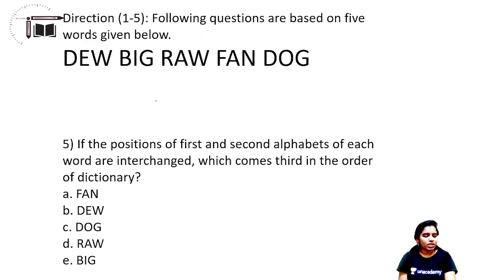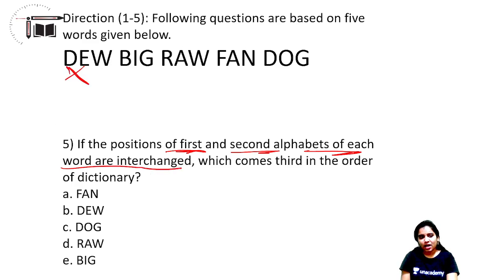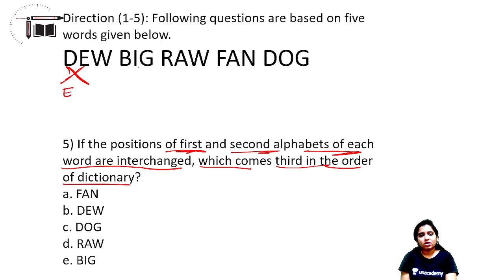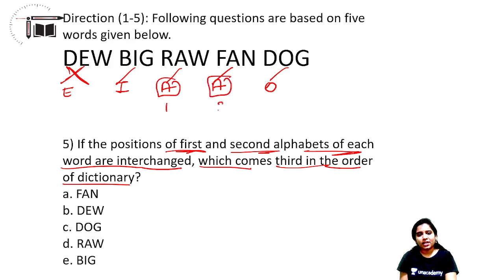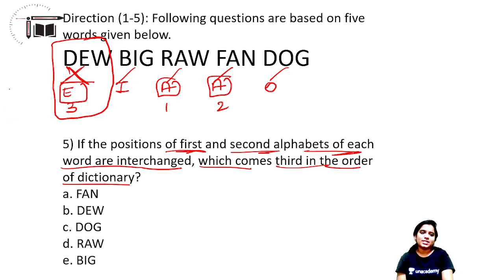Next question: if the positions of the first and second alphabets of each word are interchanged, which word comes third in dictionary order? After interchanging first and second letters: E-I-A, A, A again, O — checking which comes third in dictionary order. First, second, third — option B, D-E-W, is the correct answer.